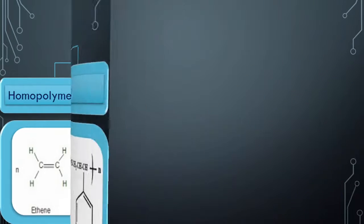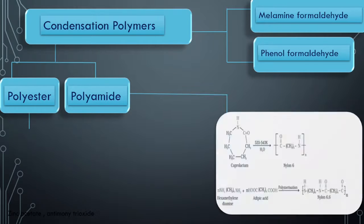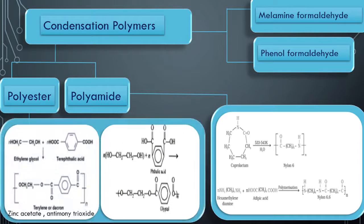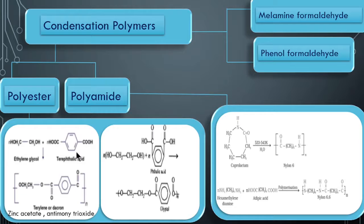We will now move to condensation polymers. These can further be classified into four categories: first is polyester, second polyamide, third phenol formaldehyde, and fourth melamine formaldehyde. Under polyester you can find two important compounds and their preparation and structure, which are very important. In almost every exam these questions are framed.